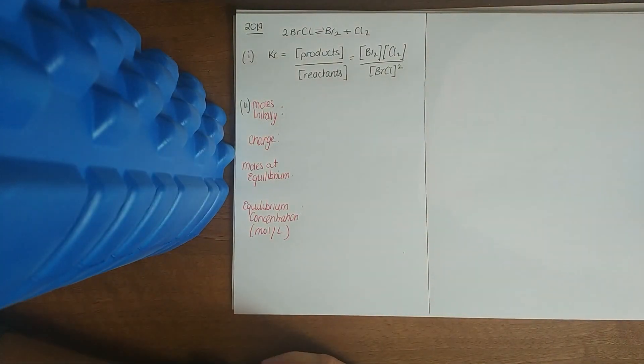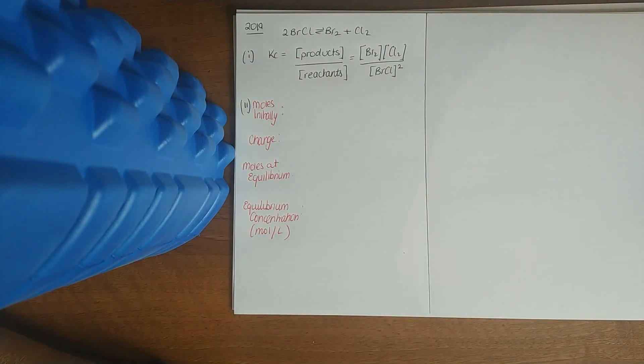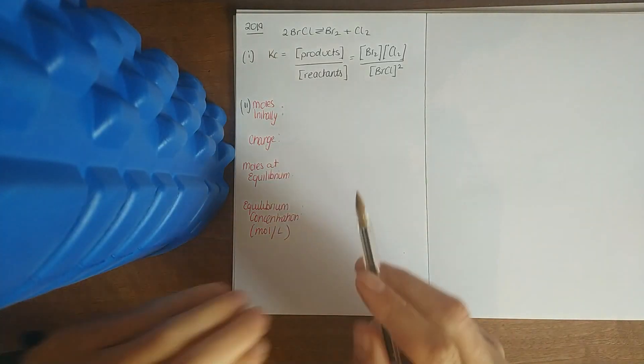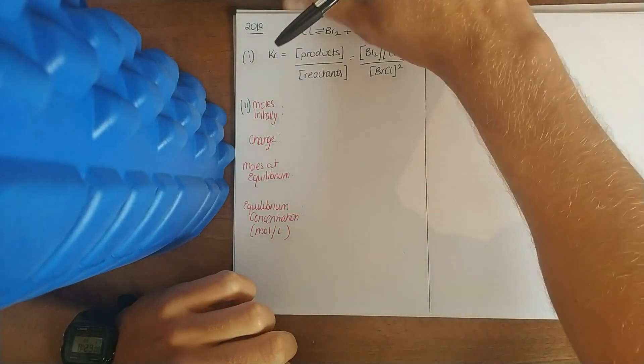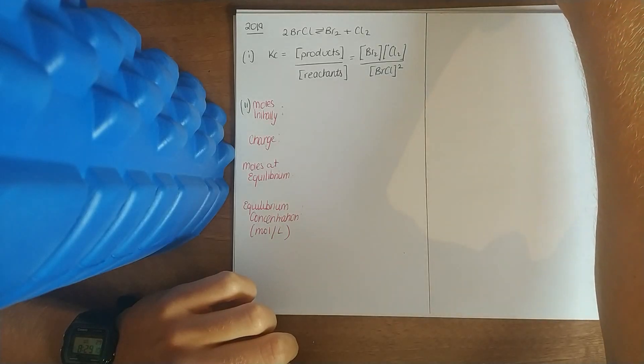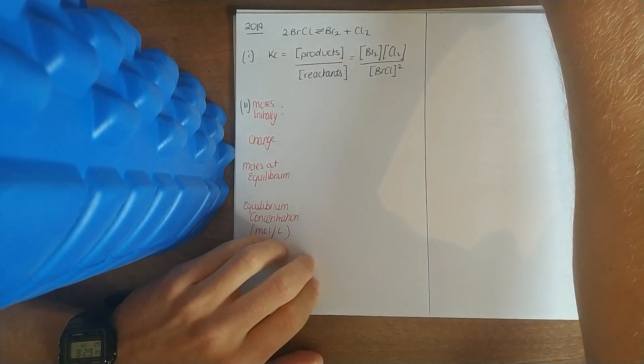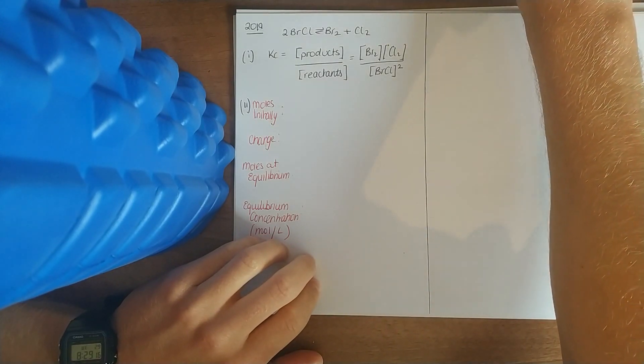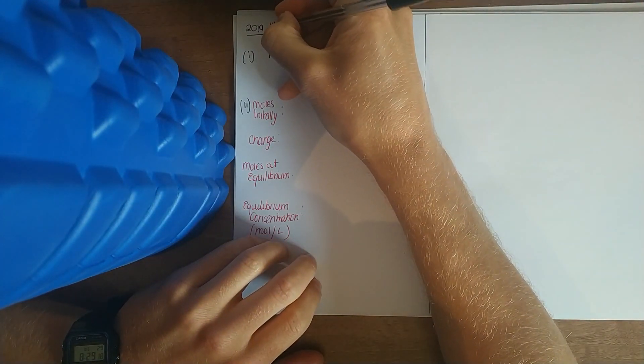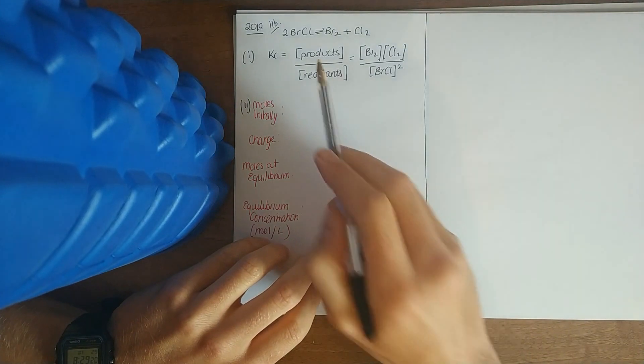We'll start looking at chemical equilibrium calculations and build it up to the theory. It's crucial to know all your definitions in this topic. In 2019 question 11b, we have a calculation.